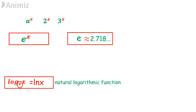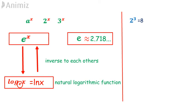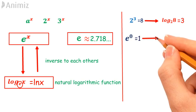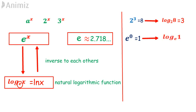Exponential and logarithmic functions are inverse to each other. If 2 to the power of 3 is 8, then log 8 base 2 is 3. If E raised to the power of 0 is 1, then log 1 base E is 0. Log 1 base E is written as ln 1.